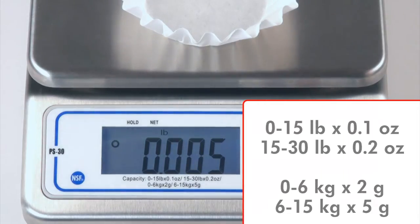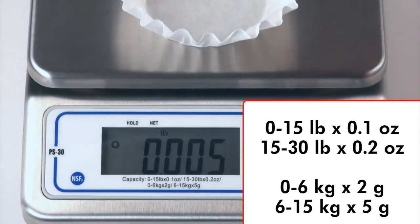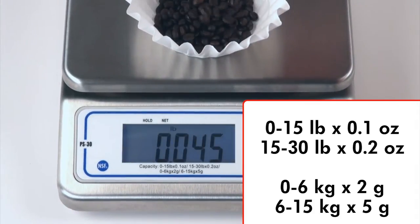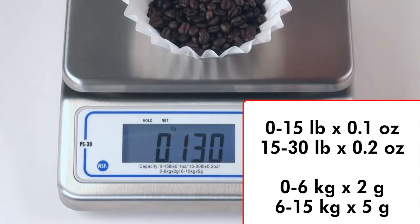Despite the higher capacity, the scale is sensitive enough to weigh in very small increments, which accommodates the necessity of a perfectly balanced recipe or the precision of measuring corn, wheat, or soybeans in agricultural applications.